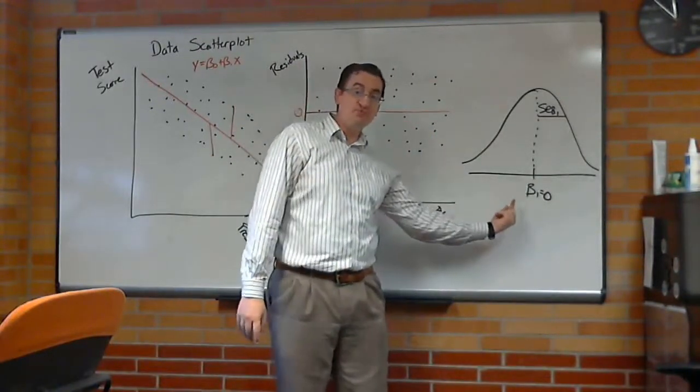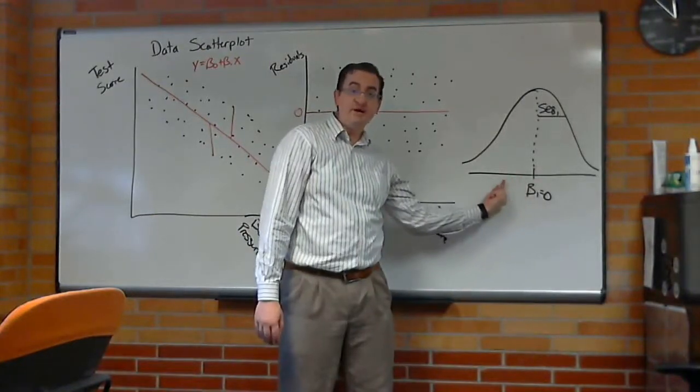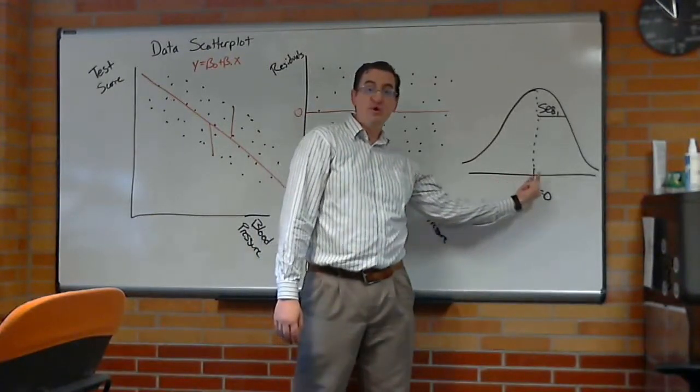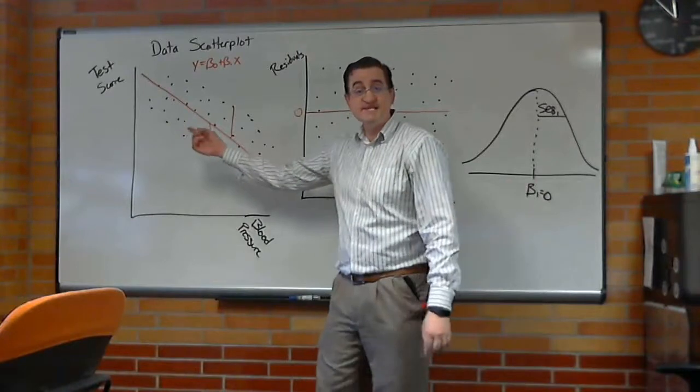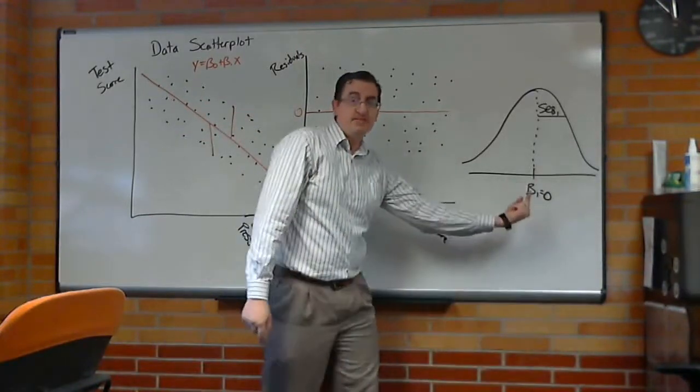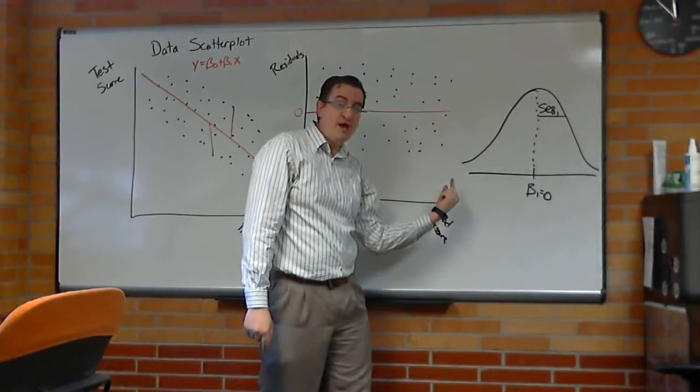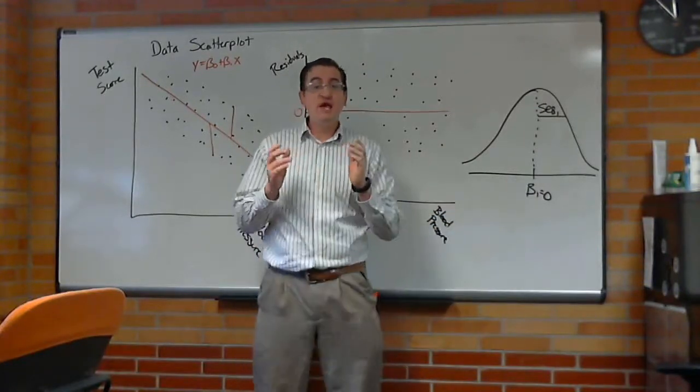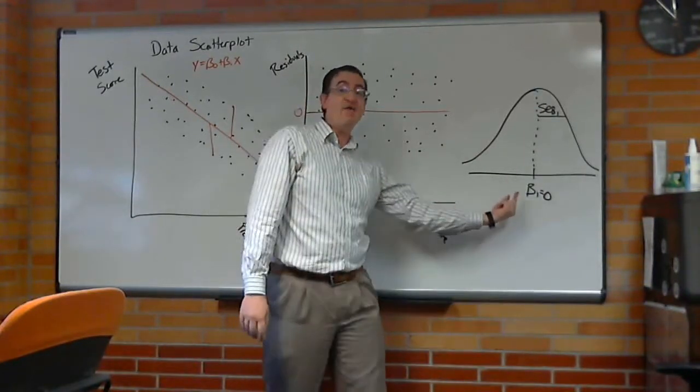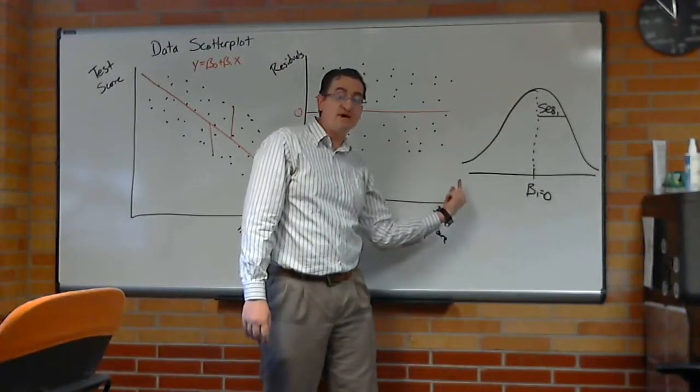So if the slope really is zero, your data might show a slope that's a little bit negative, or a little bit positive. In this example here, this is really steeply negative. My guess is, you would be way out here. So when we calculate probabilities, we're saying, how far away is it from that null hypothesis?